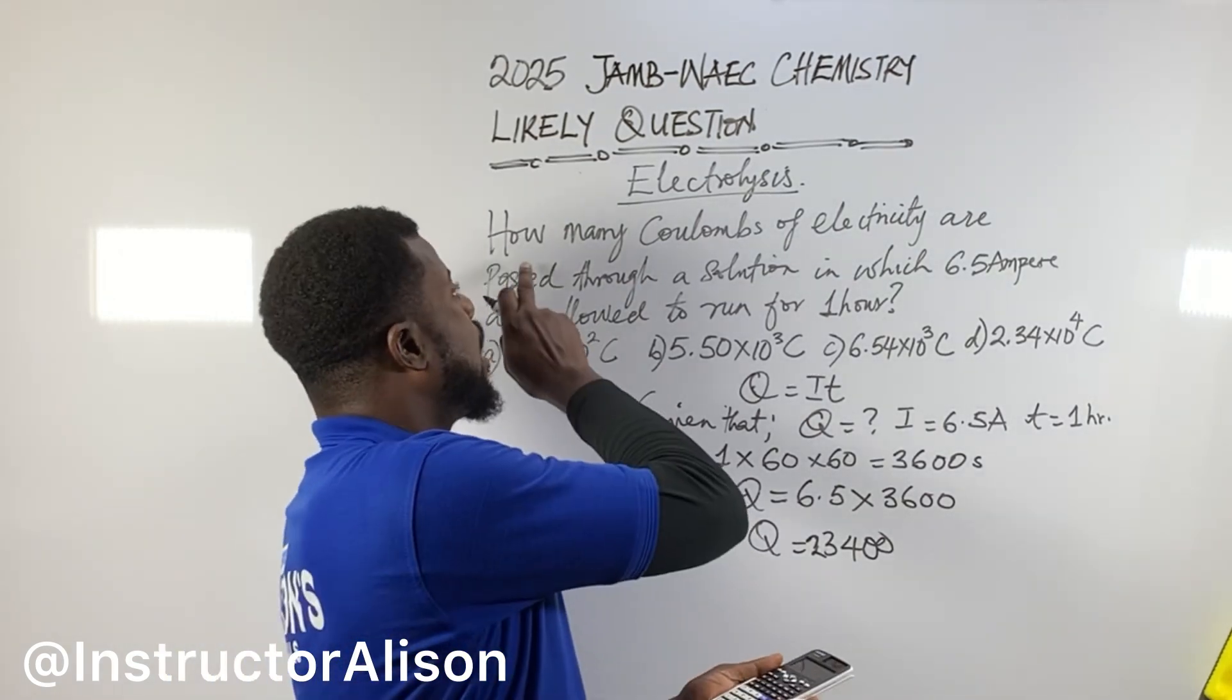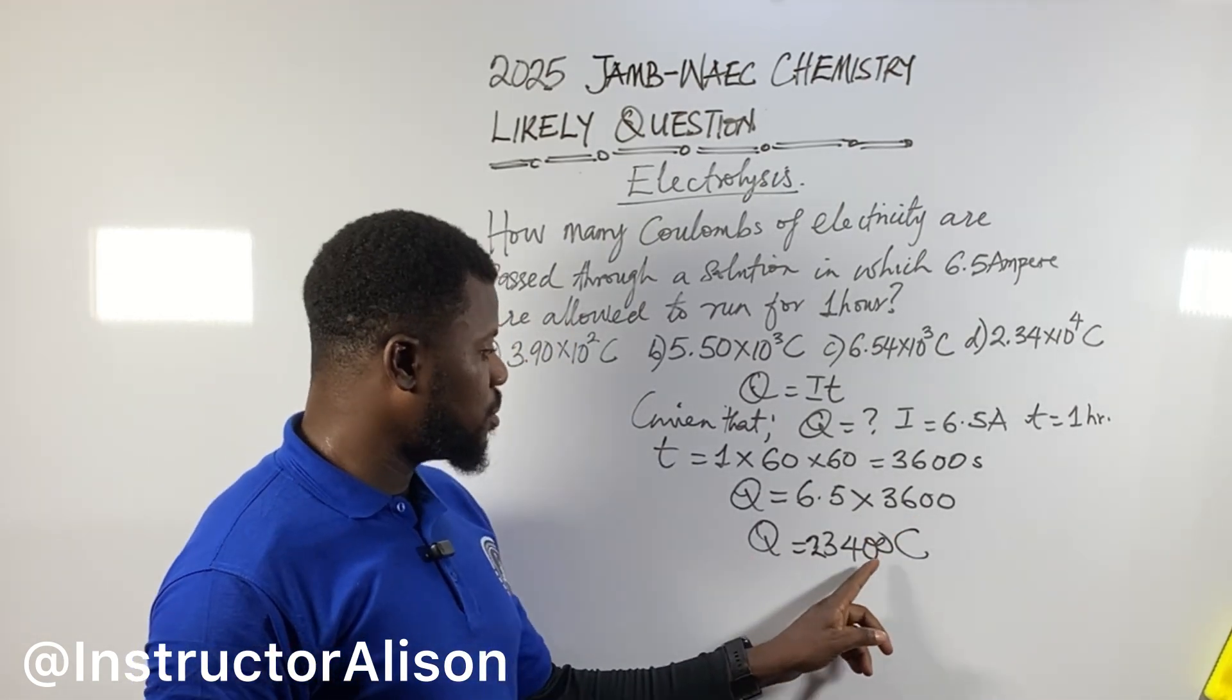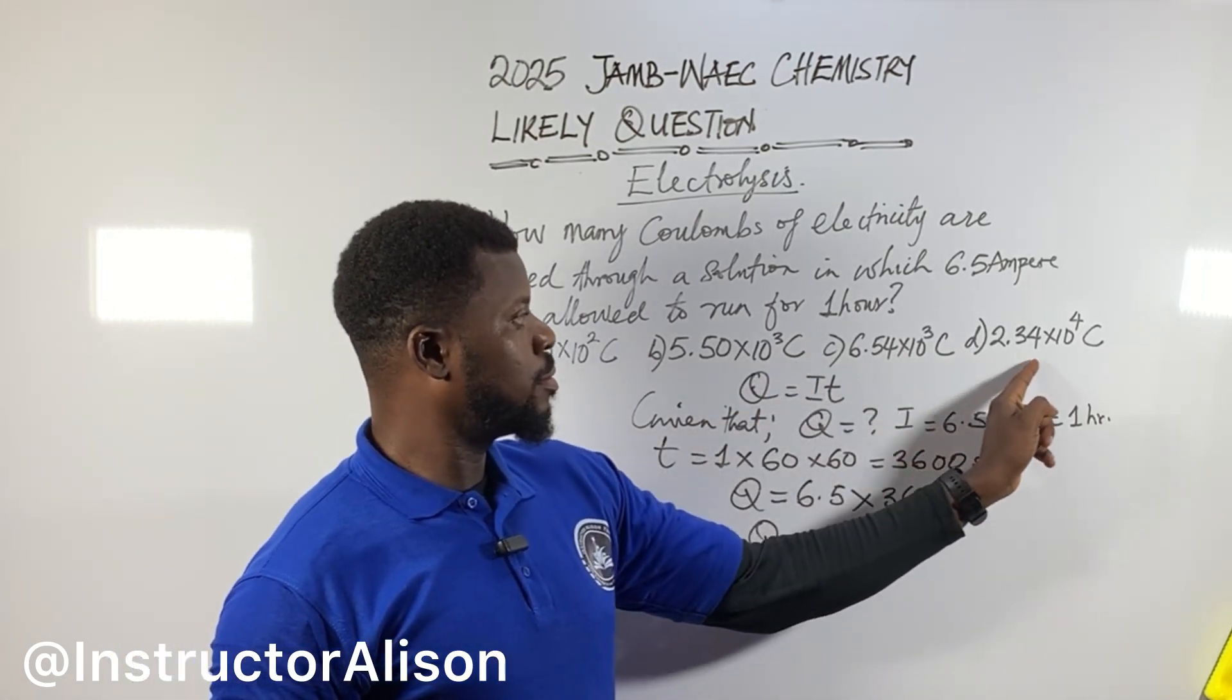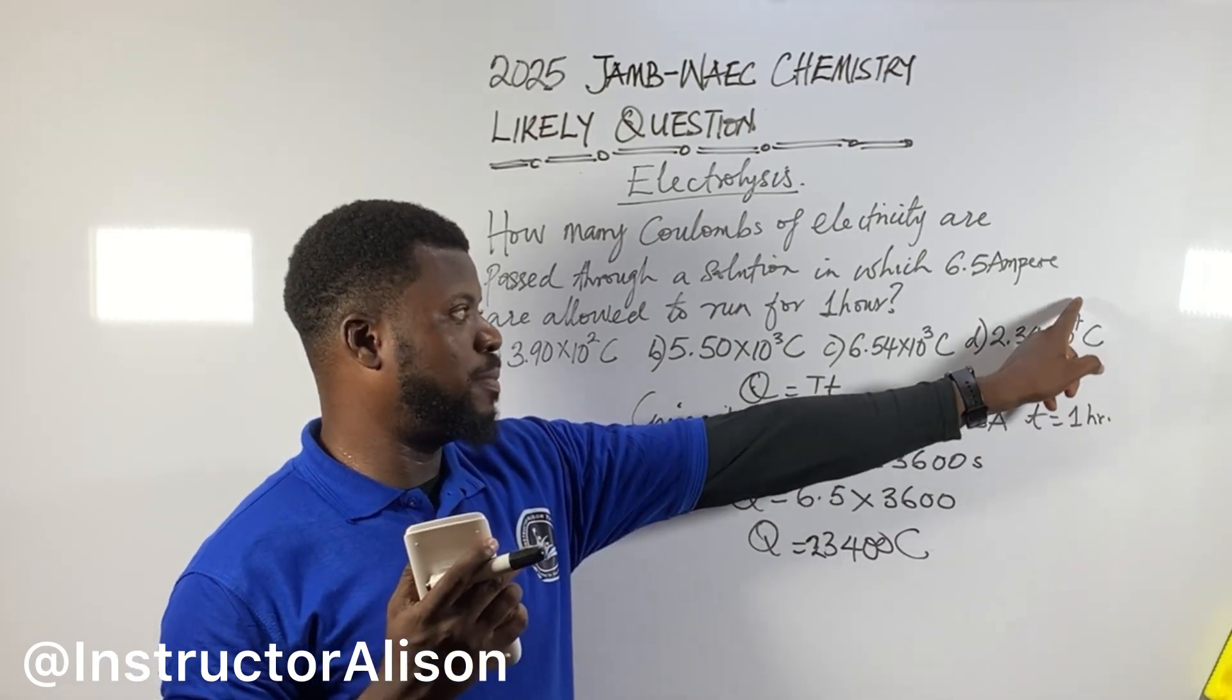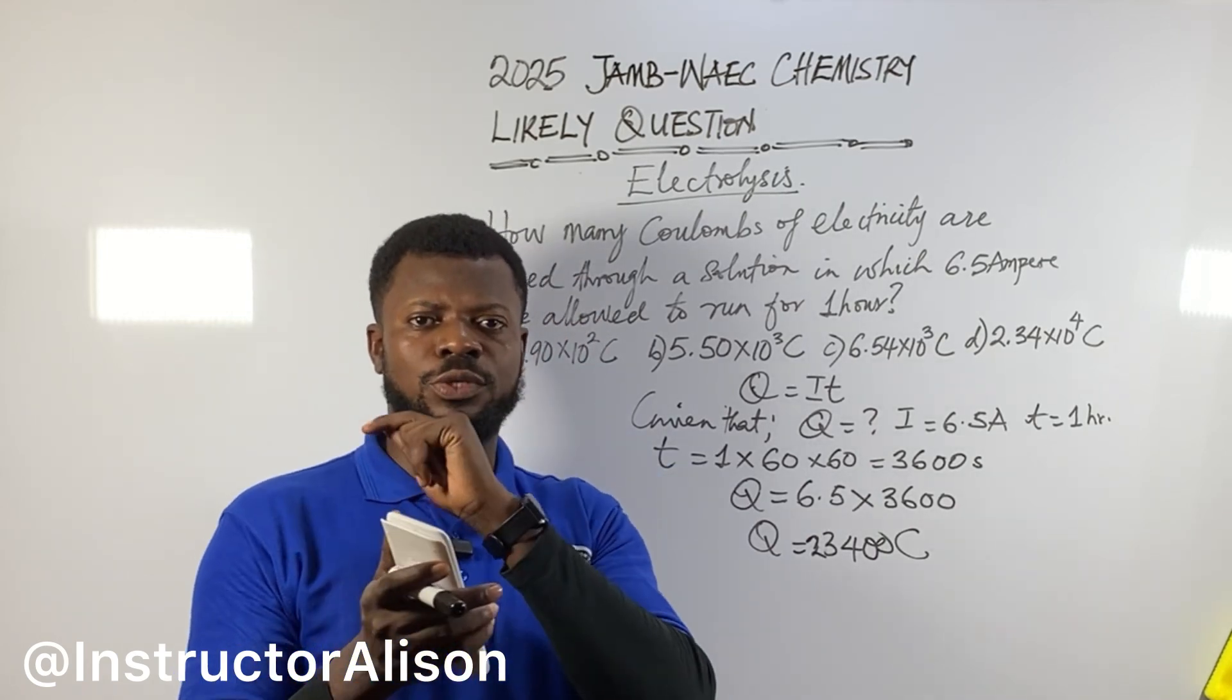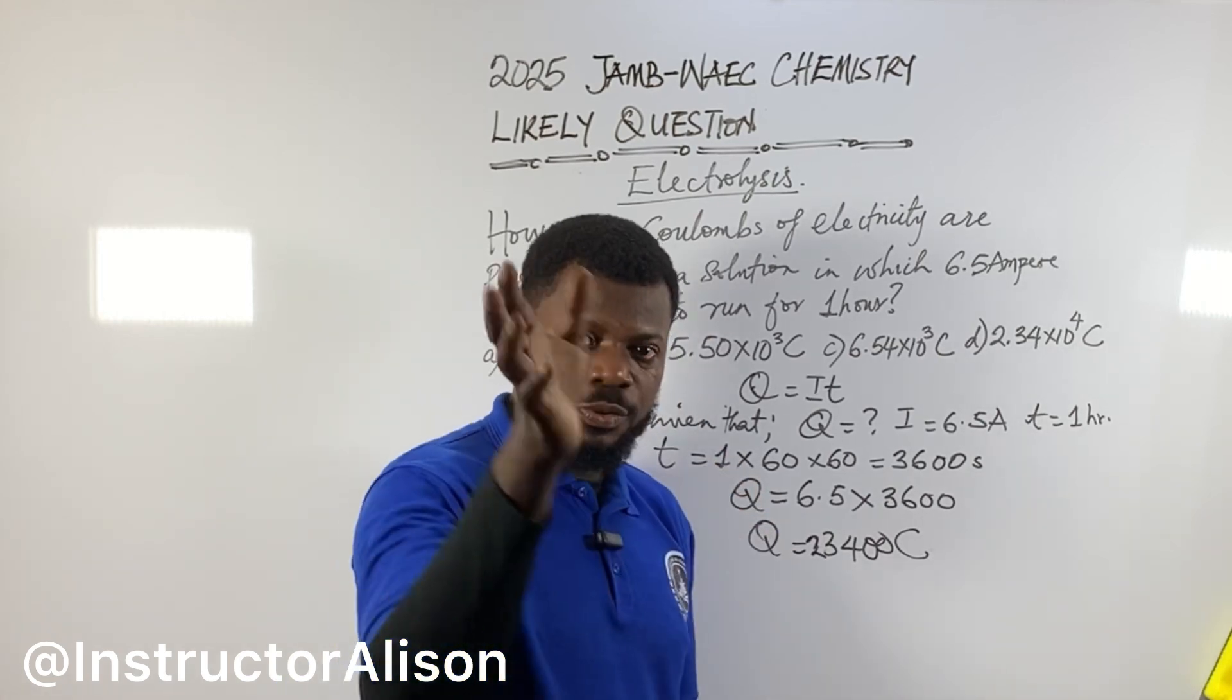You see 23,400. Instead, you'll see it written like 2.34 times 10 to the power of 4. You can ask yourself, the calculator didn't give you like that, so how do you get this particular answer? Now, that's the problem. So that's what I taught you before I started solving this. Now you can apply it now.